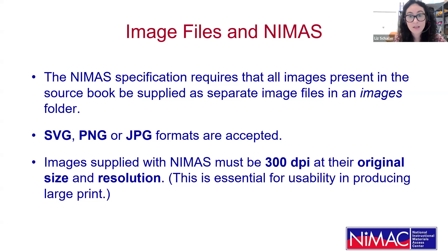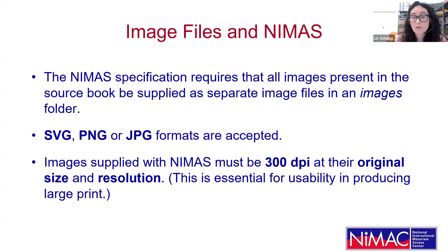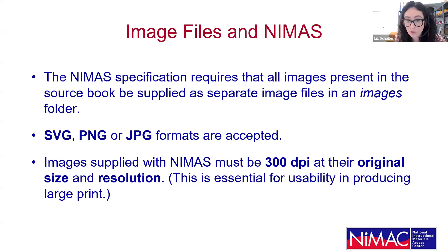Now, image files — the final component of your NIMAS file set. The specification requires that all images present in the source book be supplied as separate image files in an images folder. SVG, PNG, or JPEG formats are accepted. Images supplied with NIMAS must be 300 DPI at their original size and resolution. This is essential for producing large print and for the usability of images.